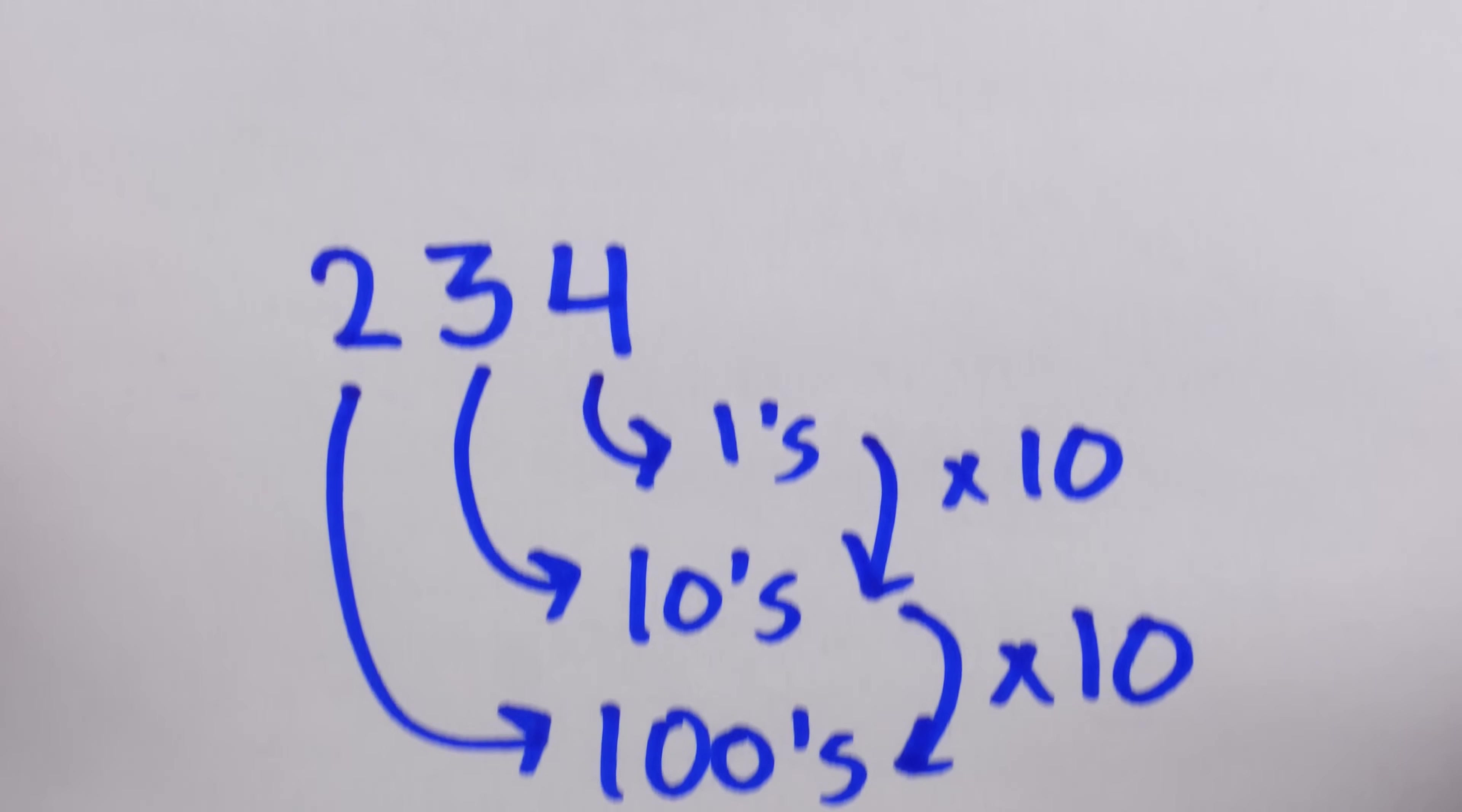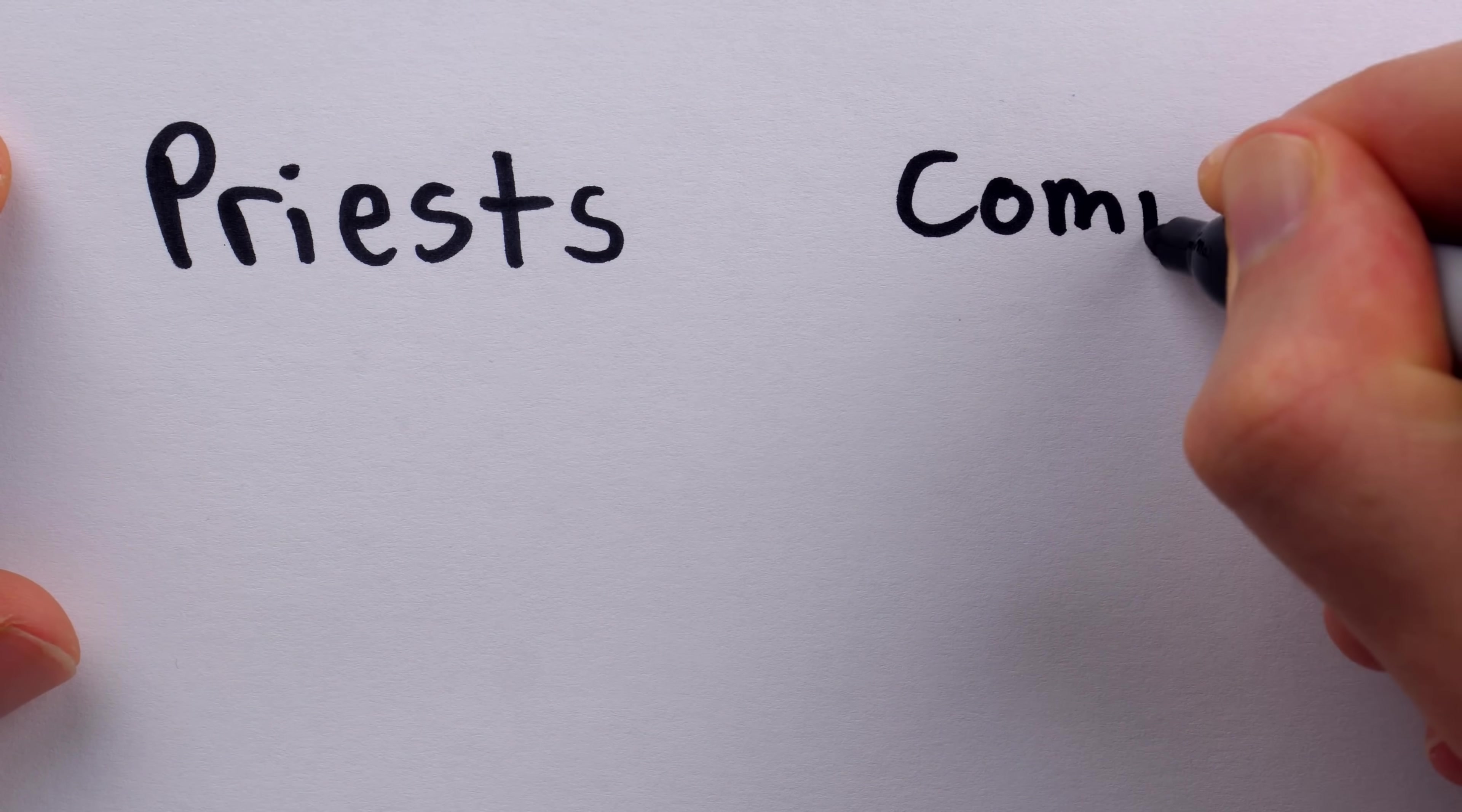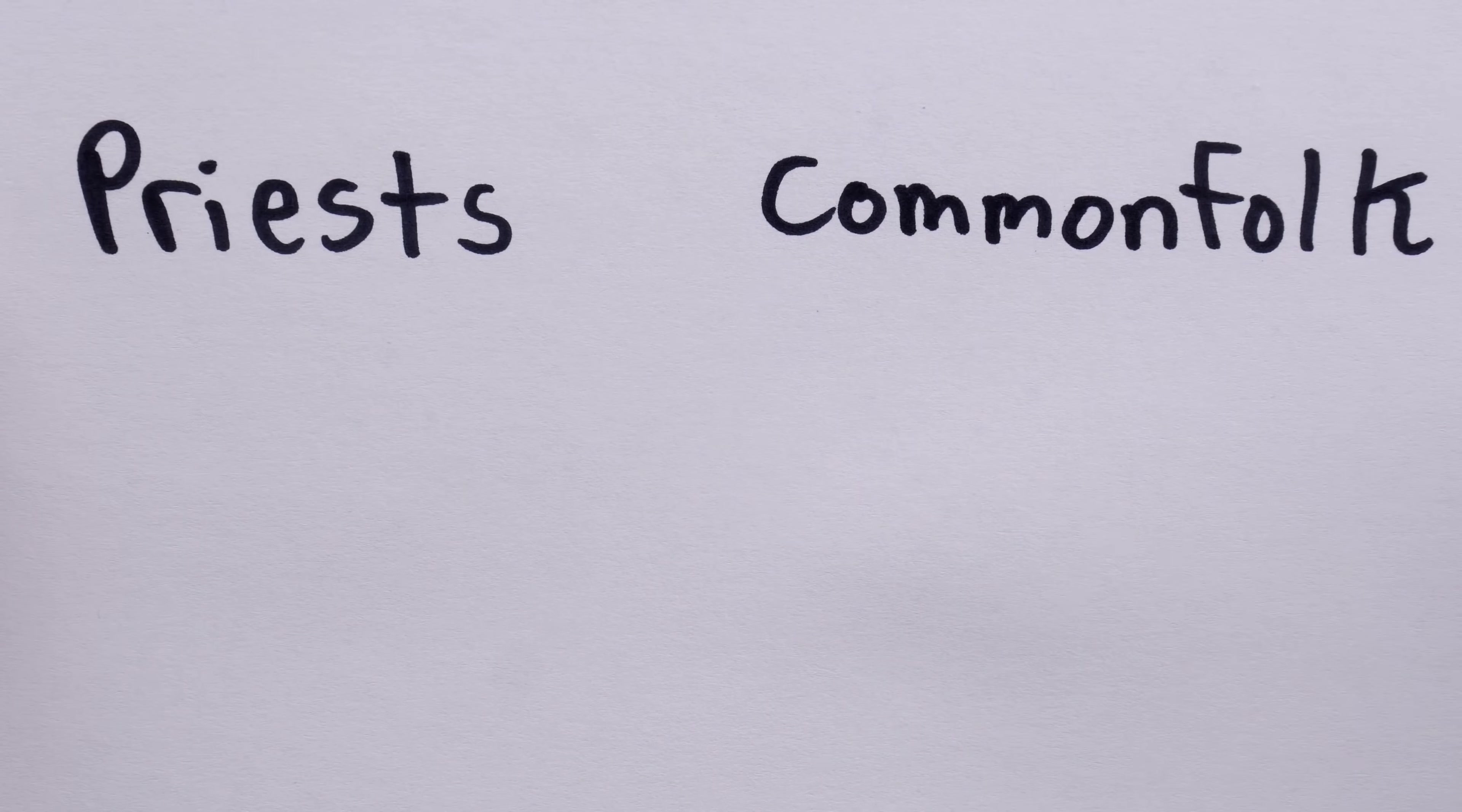The Mayan system had all of this. It had 0s, and it had place value. But to understand the one thing that made it pretty strange, you first need to understand some basics about the Mayan calendar. The Mayans simultaneously had two different sets of symbols for enumeration. There were symbols used by priests, and there were symbols used by common folk, and they were hugely different.